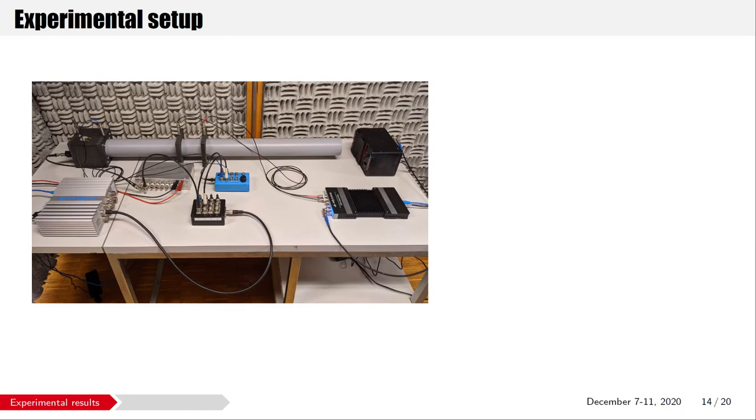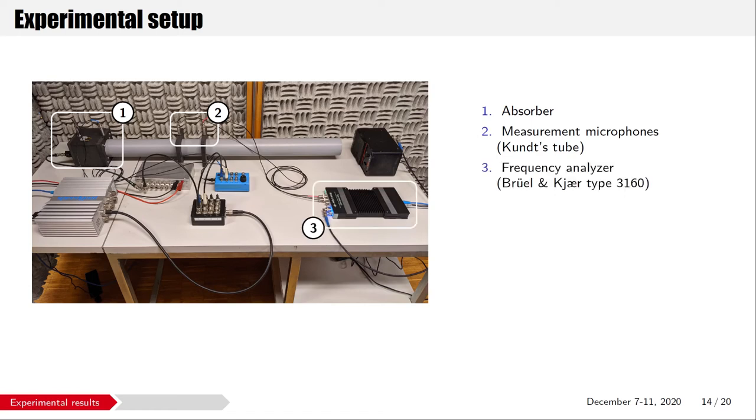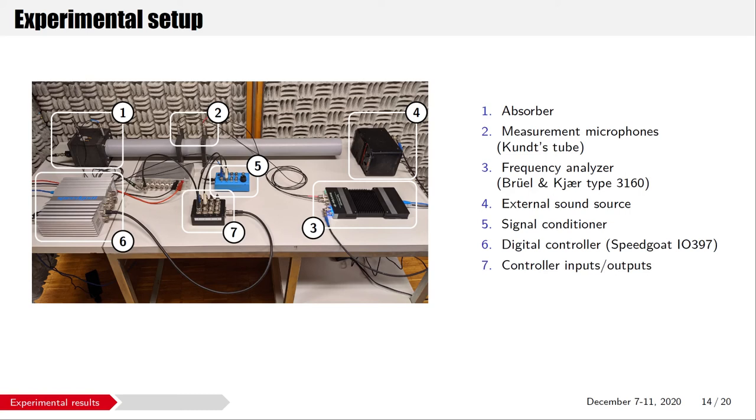This is the experimental setup I used. I measured the impedance presented by the absorber using a Kundt tube. Here you recognize the absorber. It is mounted in a Kundt tube with two measurement microphones. Their signals are acquired by a frequency analyzer, which also excites an external sound source. The absorber microphones are polarized by the signal conditioner, which is measured by the digital controller. And the output voltage of the controller is converted into a current thanks to this voltage-controlled current source.